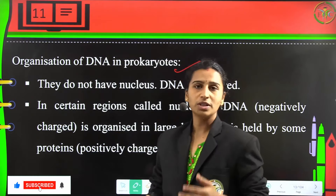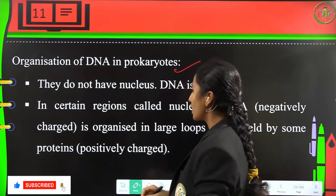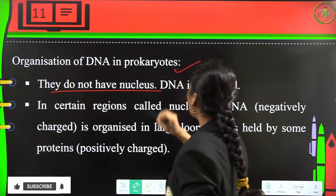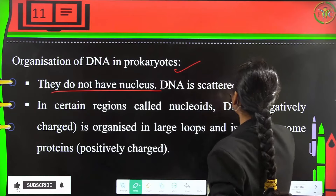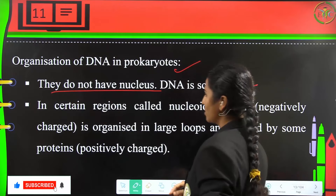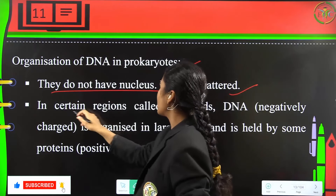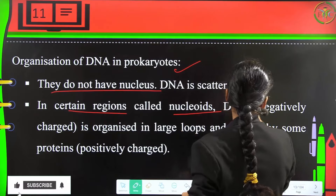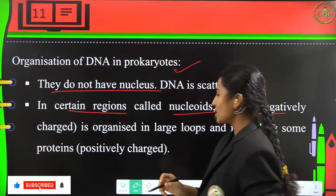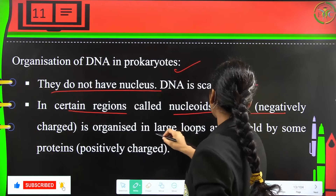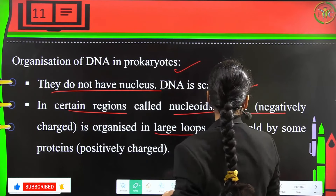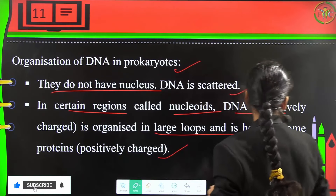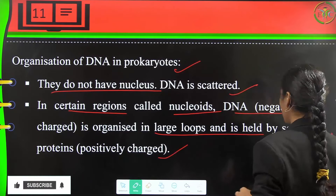Coming to the organization of DNA in prokaryotes: they do not have a nucleus, so DNA is scattered in prokaryotes. In certain regions called the nucleoid, the negatively charged DNA is organized in large loops and is held by positively charged proteins.